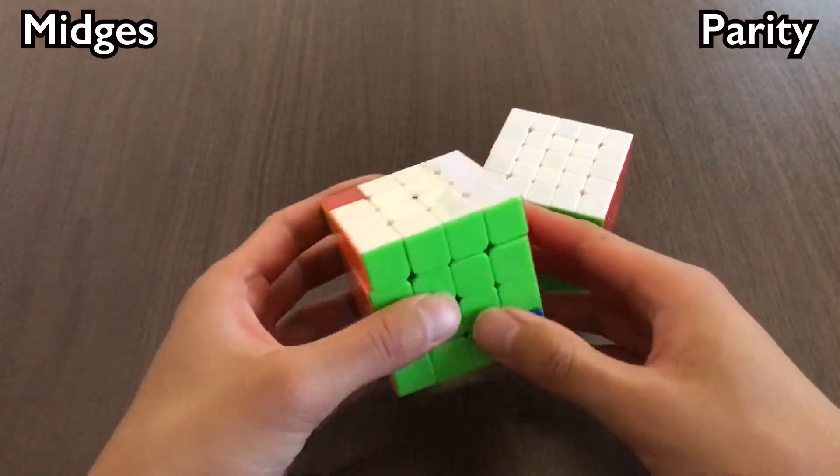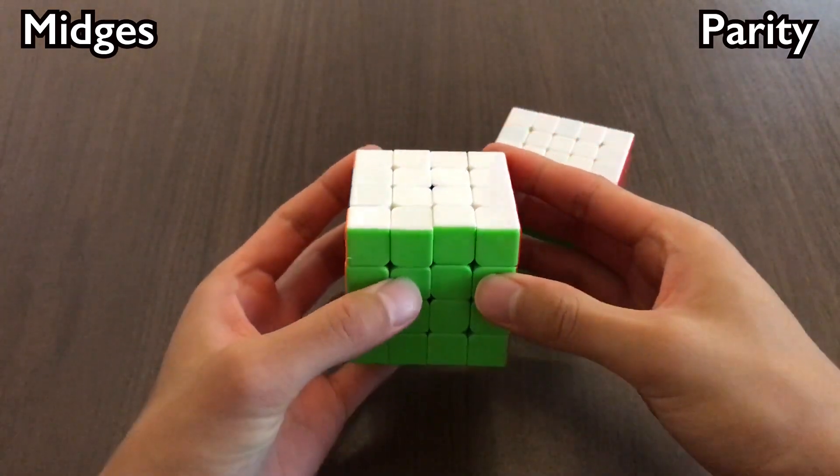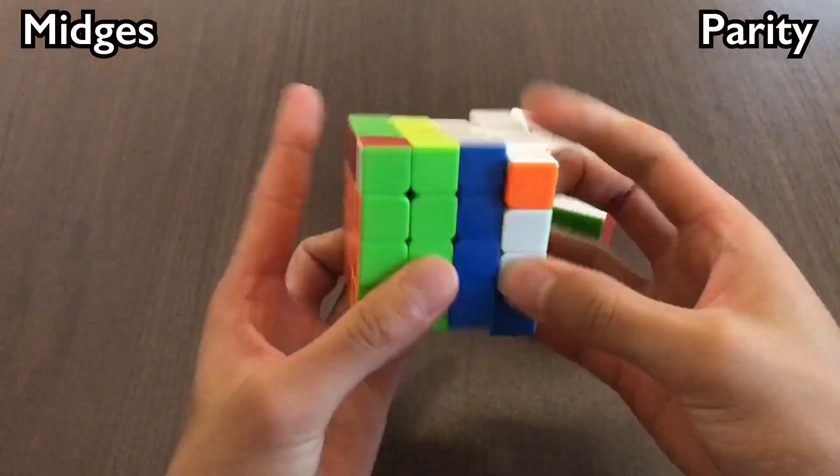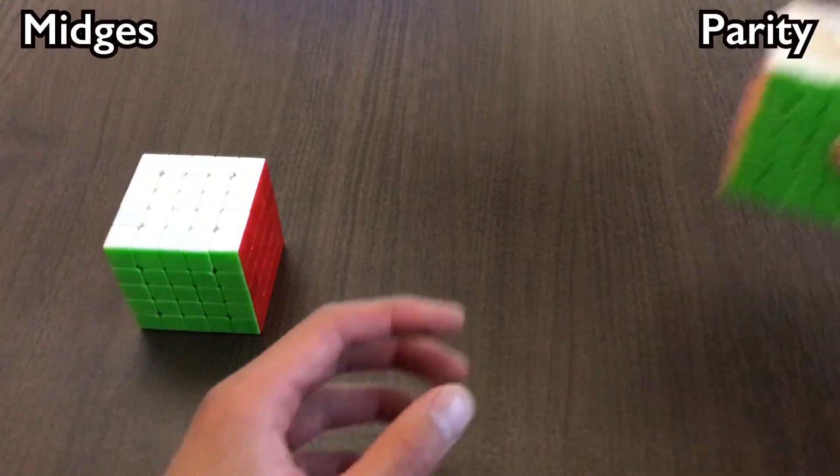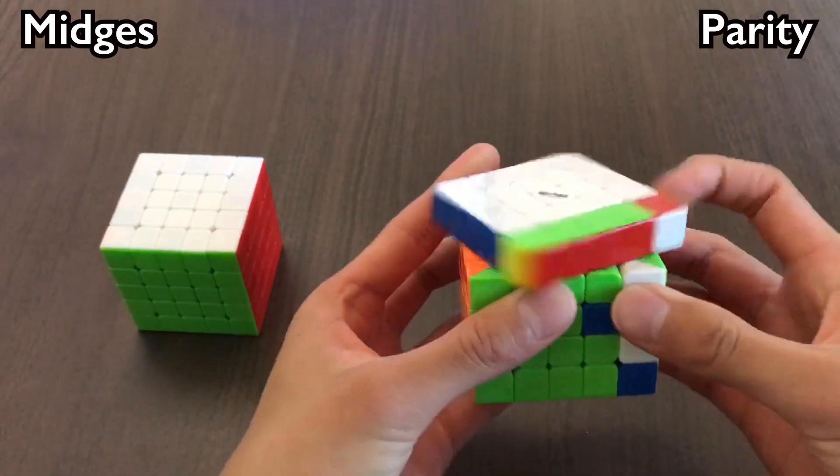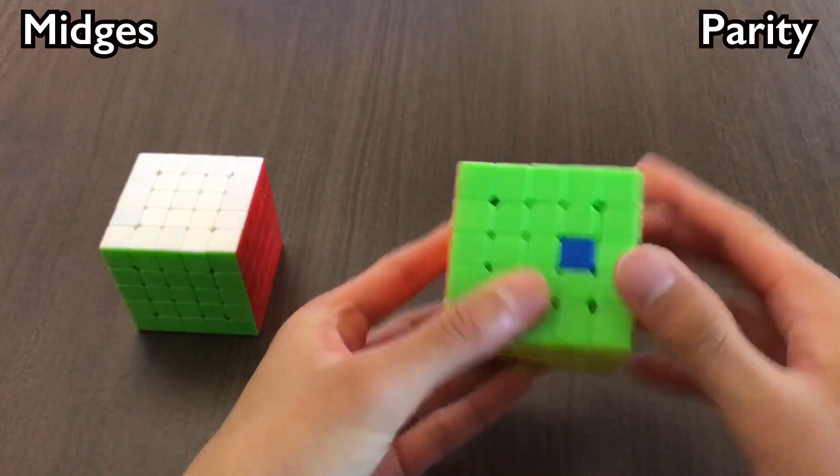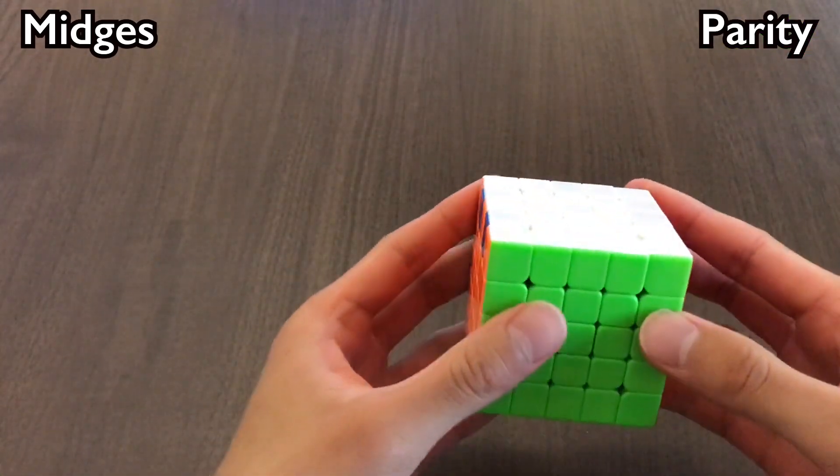On 4-blind, after you solve corners, you would fix wings with this adjacent PLL parity alg. However, on a 5x5, that alg doesn't work because it messes up the centers. So instead, we have to use this alg.